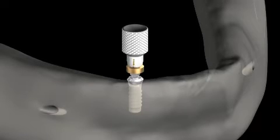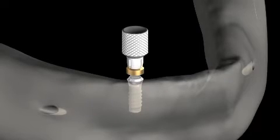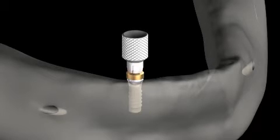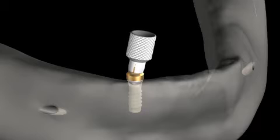When placing the ERA abutment into the Stern IC, select the appropriate sulcus height and insert the ERA abutment into the implant and tighten up to 20 newtons.